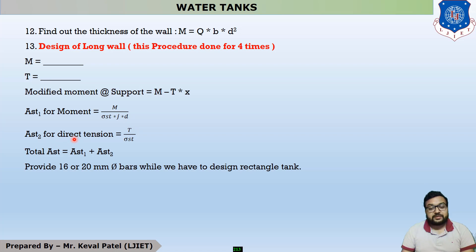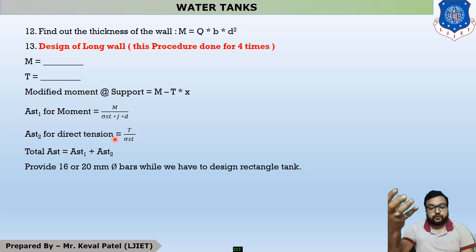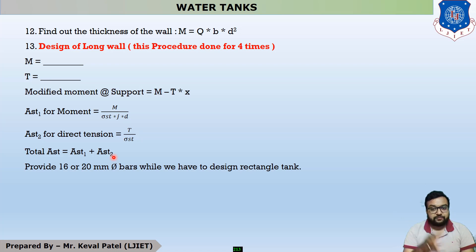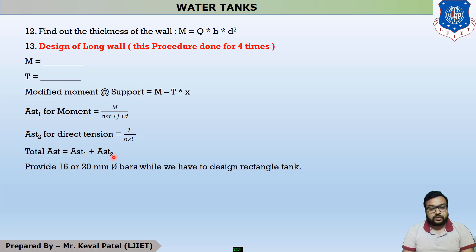This equation is not given in any IS code but is easy to derive since stress equals force divided by area, so area equals force divided by stress. The total AST equals AST1 plus AST2. We find the required AST, then calculate spacing, spacing provided, and AST provided. Generally, 16 mm or 20 mm diameter reinforcement is used in rectangular water tanks.